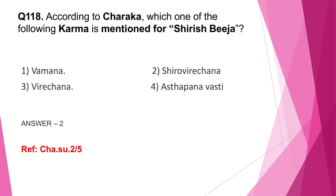Question number 118: According to Charaka, which karma is mentioned for Shirisha Bija? The correct answer is option 2. This question is from Charaka Sutrasthana, Apamarga Tanduliya Adhyaya. Few drugs are mentioned here for the purpose of Shirovirechana, which can be used in conditions like Peenasa, Ardhavabhedaka, Apasmara, etc., and Shirisha Bija is one among those drugs.